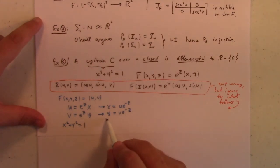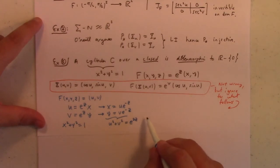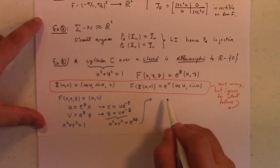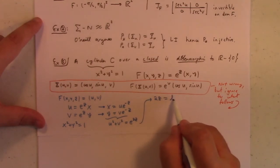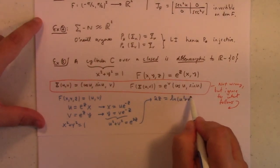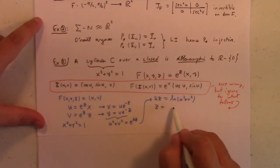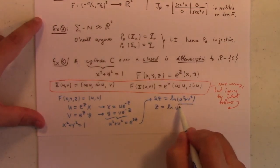So, you put those together, and we got u squared plus v squared equals e to the 2z, right? If I move the e to the z to the other side. And so, that gives me that z, or, well, it gives me 2z is equal to the natural log of u squared plus v squared, which then gives me z is equal to the natural log of the square root of u squared plus v squared.